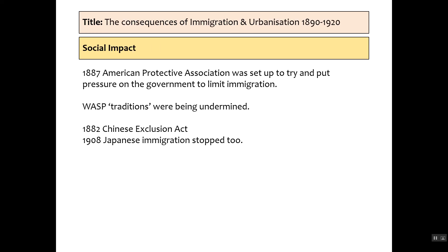What's the impact on society? Across America in 1887 we've got the American Protective Association being set up, which tries to put pressure on the government to limit immigration. They argue that white Anglo-Saxon Protestant traditions are being undermined. And there is some success: we've got the 1882 Chinese Exclusion Act and the 1908 Japanese immigration stopping altogether.